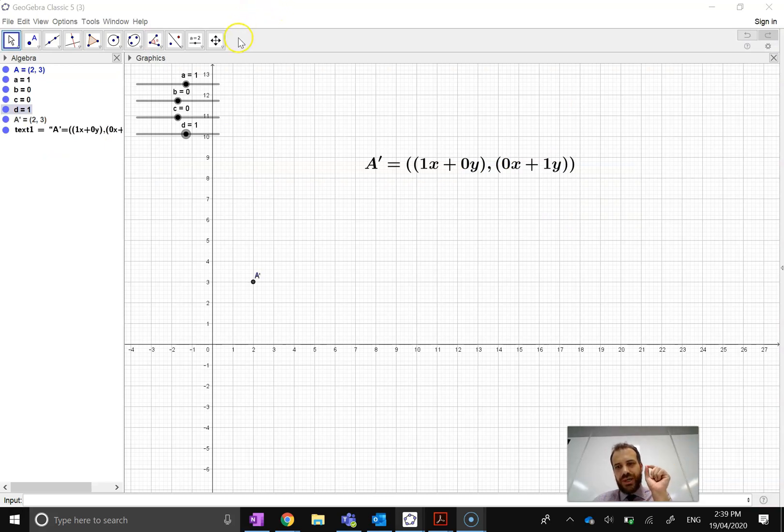So briefly, because we're going to look at this in much more depth in a minute, we've got a point A. Now if I add in its image A dash, its image is going to be one times the x coordinate of A plus some number, in this case zero, times the y coordinate, and then zero times the x coordinate plus some number, in this case one times the y coordinate. Now at the moment the image and the original are in the same place because I'm just saying make the x coordinate the x coordinate and make the y coordinate the y coordinate.